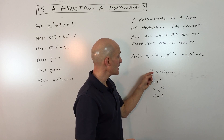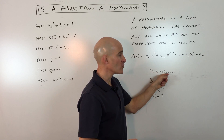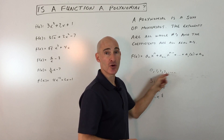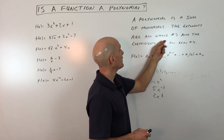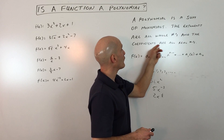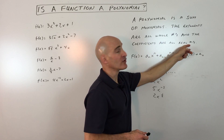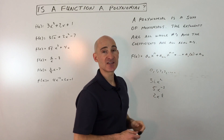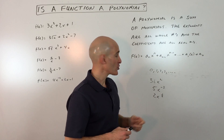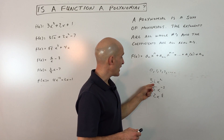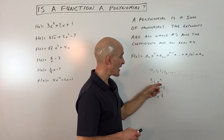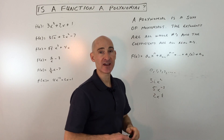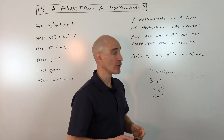Remember, whole numbers are 0, 1, 2, 3 — so 0 and the positive integers. And the coefficients are all real numbers, so you're not going to see any terms that have an i in front of the variable, like 3i·x squared. That's not going to be a polynomial.